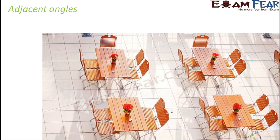Now what do you see on the screen? We see maybe a restaurant or a dining hall where you have tables and chairs where people can sit and eat or maybe have coffee. Now how do you think the word adjacent is related to this restaurant or dining area? I would like to give you an example. Let's say that you are sitting in this chair, your friend is sitting on this chair, and your brother is sitting on this chair.